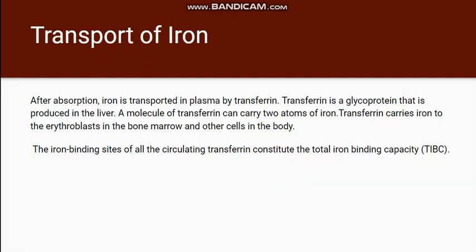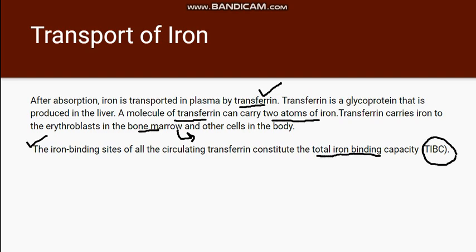Iron is transported with the help of transferrin, and one molecule of transferrin can carry two atoms of iron. This takes the iron to the erythroblasts in the bone marrow, where it is incorporated into the heme portion of hemoglobin. TIBC — the total iron binding capacity — refers to the iron binding sites of the circulating transferrin, that is, the free iron binding sites present in the circulating transferrin.